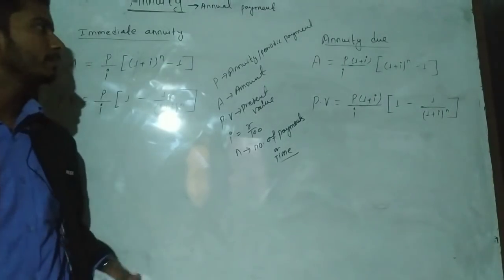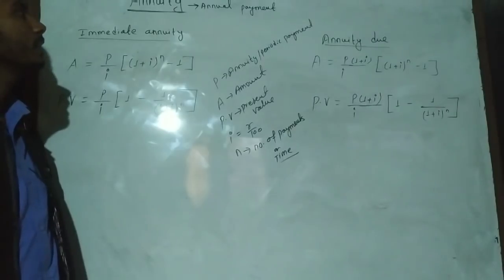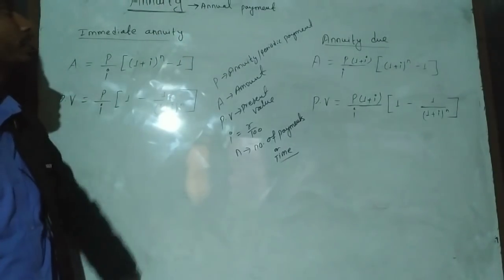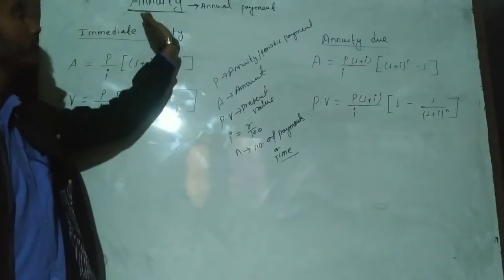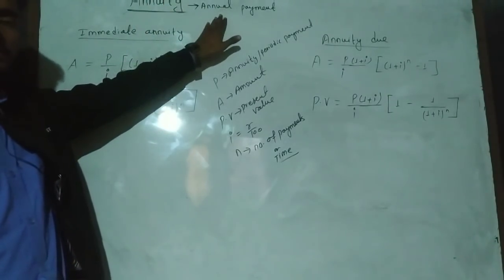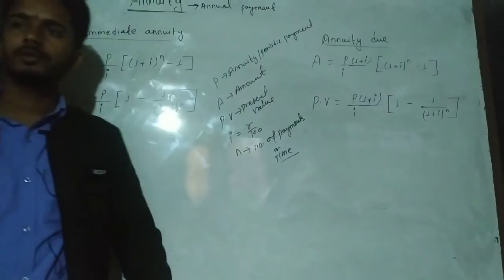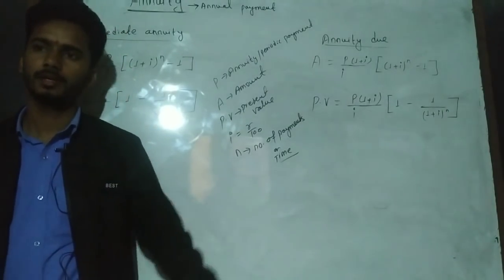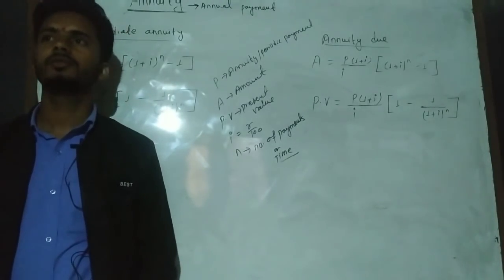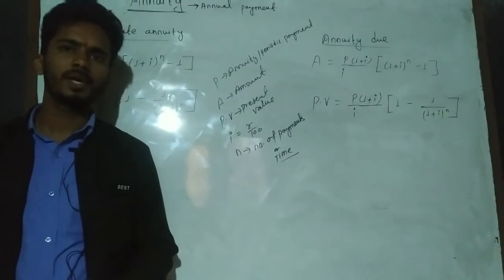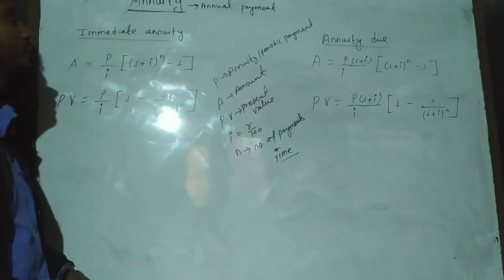Hello everyone. Today is a new chapter on Annuity. Annuity is called annual payment — that is the word meaning. Payment at a fixed interval of time is called annuity. In some sense, we have a scholarship of $5,000 per year — that is called an annuity. When you are a senior citizen, you have a pension, an amount of salary received periodically — that is called annuity.